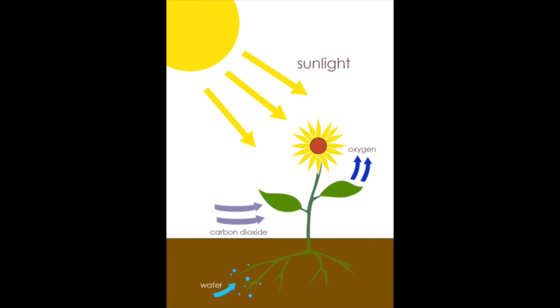So photosynthesis is controlled by enzymes, and these are denatured at temperatures above 40 degrees.